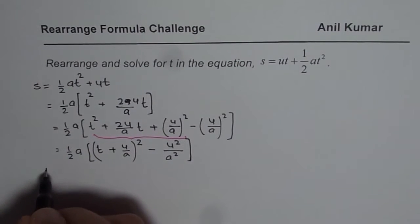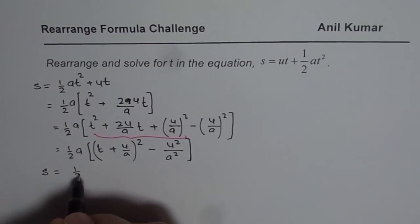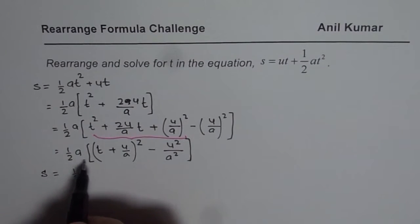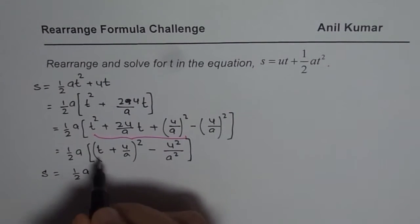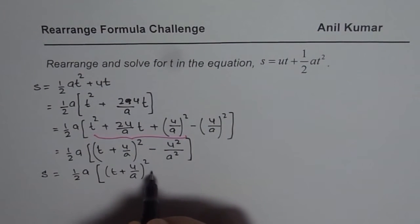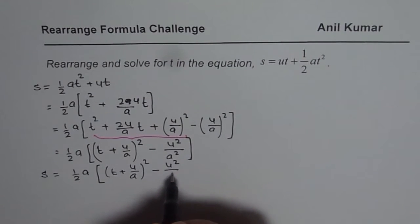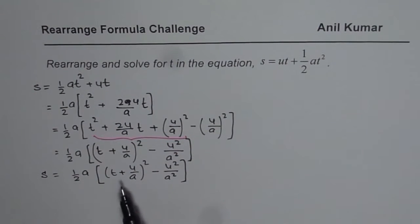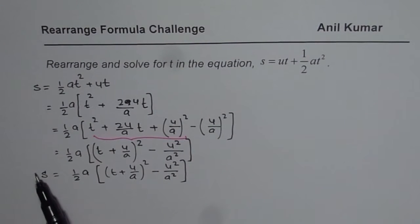So let me just complete this by writing s equals to half a times t plus u over a whole square minus u square over a square. Now to isolate t, we will first multiply by 2, divide by a. So we will get this term equals to that. Let me show you all that on the right side of this page.